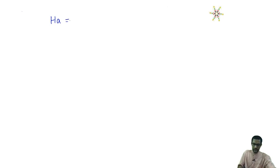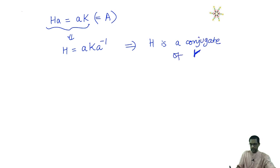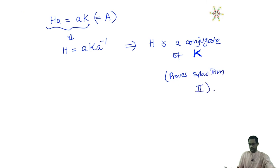We are done. The right coset H · a is the same as A, and A · k is also A. But what does this mean? It just says that H equals A · K · A inverse. In other words, H is a conjugate of K. This proves Sylow theorem 2.